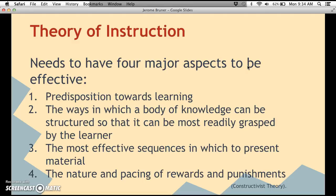There are four major aspects needed for an effective theory of instruction: number one is a predisposition toward learning; number two is the ways in which a body of knowledge can be structured so it can be most readily grasped by the learner; number three is the most effective sequences in which to present material; and number four is the nature and pacing of rewards and punishments.